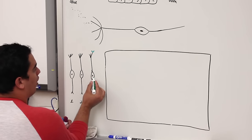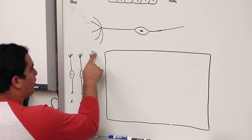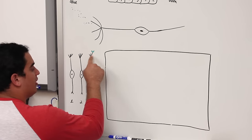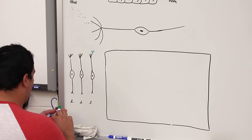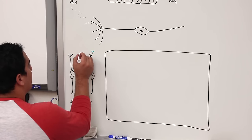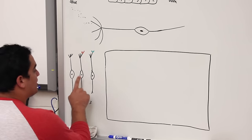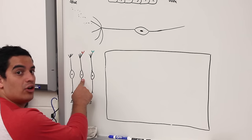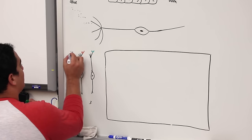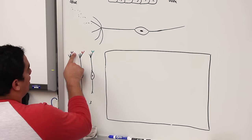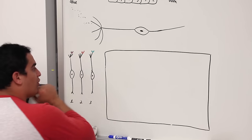The receptor protein on olfactory neuron one — all of its ciliary extensions will express the same green receptor protein. Then olfactory neuron two has a different odorant receptor specific to that neuron. And the third olfactory neuron has its own receptor proteins responding to different types of odors, specific to that neuron.